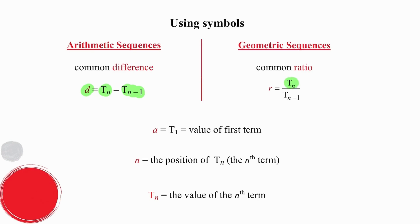To find out the common ratio, you can take any term and divide by the preceding term. So a quick reminder again, a is the value of the first term, n is the position of the term with the value of tn. Tn, on the other hand, is the value of the nth term.